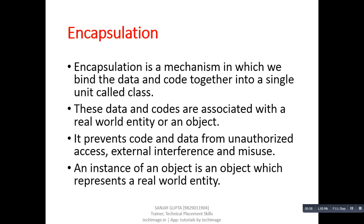The first one is encapsulation. Encapsulation is a mechanism in which we bind the data or code together into a single unit which is called a class. These data or codes are associated with a real world entity or an object. If we are using any object in our program, it means we are implementing a real world entity. It prevents code and data from unauthorized access, external interference, and misuse.